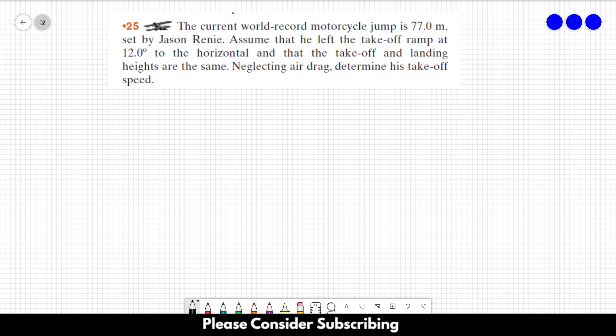Neglecting air drag, determine his takeoff speed. So we know that the range when you leave the ground at some angle is equal to r equals the initial velocity squared divided by g times the sine of 2 times the angle to the horizontal.